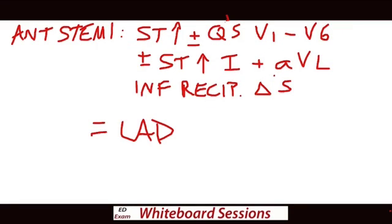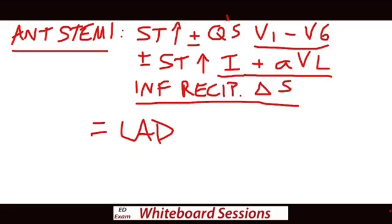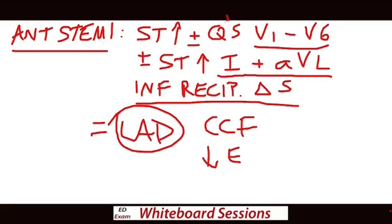All right, this is just a quick little discussion about anterior STEMIs. Of course, this is the worst type of STEMI you can have. So you're diagnosed on the ECG by ST elevation, plus or minus Q's in V1 to V6, ST elevation in lead 1 and AVL, and inferior reciprocal changes. This indicates a LAD occlusion. They call this vessel the widow maker. Carries the worst prognosis, the largest infarct size, has a higher mortality, higher rates of CCF, and lowest ejection fraction of all your infarct kinds.